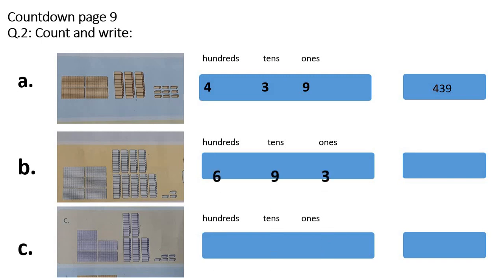Students, now we will do part B. How many hundreds? 1, 2, 3, 4, 5, 6: 600. How many tens? 1, 2, 3, 4, 5, 6, 7, 8, 9: 9 tens. And how many ones? 1, 2, 3: 3 ones. So you will write 693.